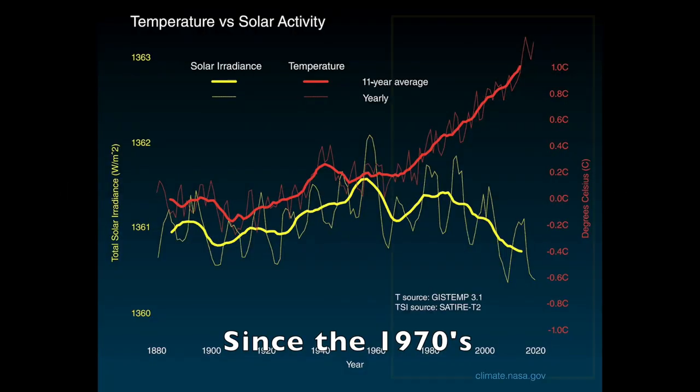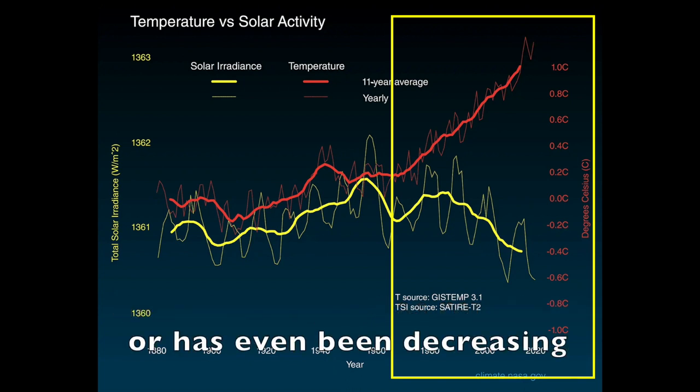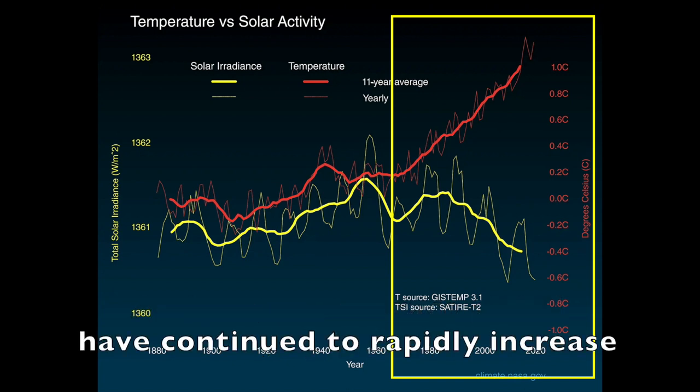Indeed, since the 1970s, the solar output has remained stable or has even been decreasing as we can see in this graph. And yet, our average global temperatures have continued to rapidly increase. So even if sunspots can affect climate, they cannot explain the climate change we are seeing today.